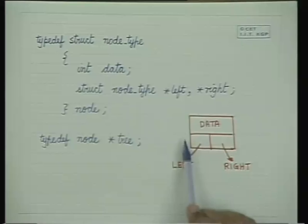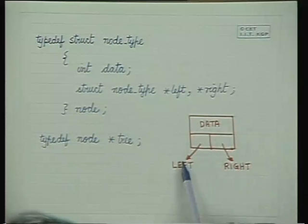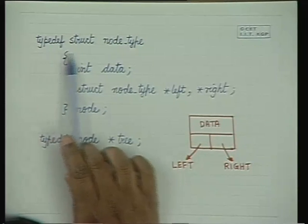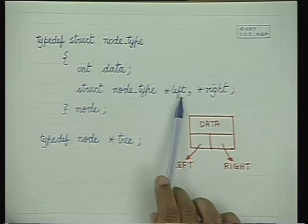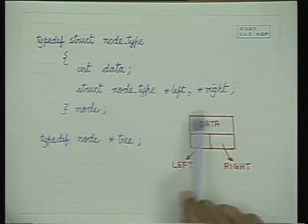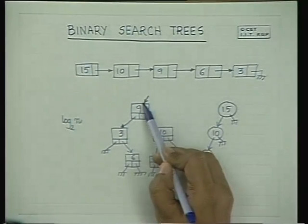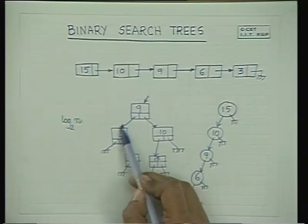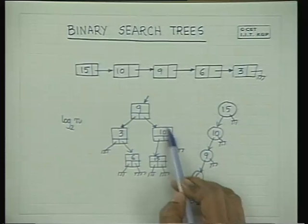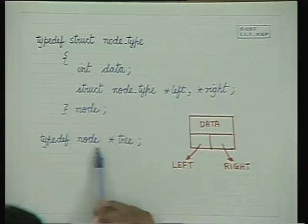Let's first see what the node structure would be. In a binary search tree, the node has a data field, a left pointer, and a right pointer. The structure is: typedef struct node_type { data; node_type left; node_type right; }. There will be a left pointer, a right pointer, and a tree is a pointer to such a node. A pointer to any node gives you that subtree, and by default null is also a pointer to a tree.